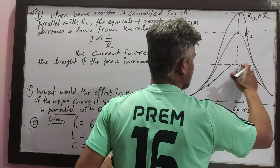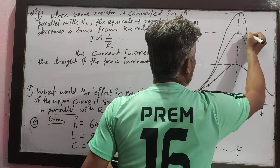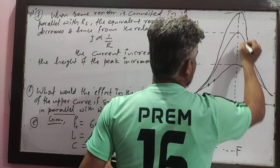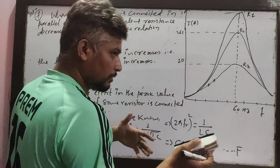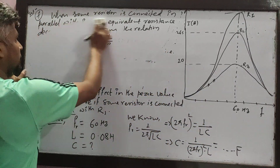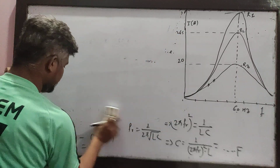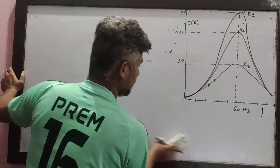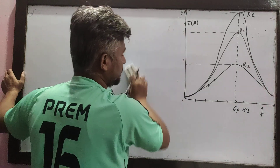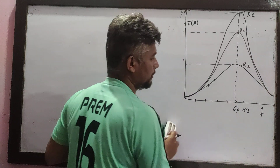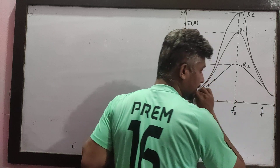Now I will explain the curves. The resistance values are R3, R2, and R1 respectively for the different curves. For the same LC, the resonance frequency is the same, but R1, R2, and R3 give different peak heights.